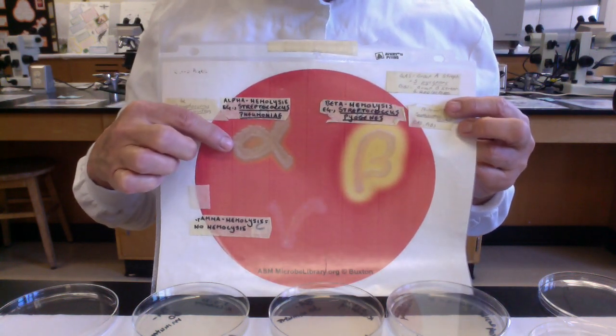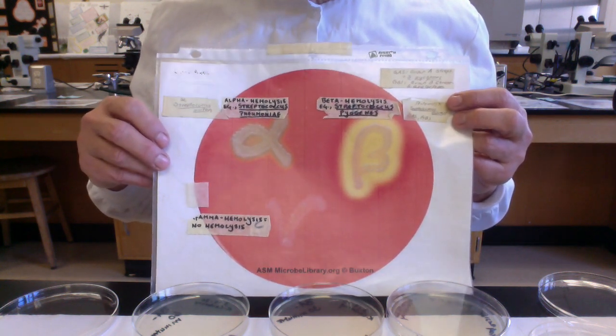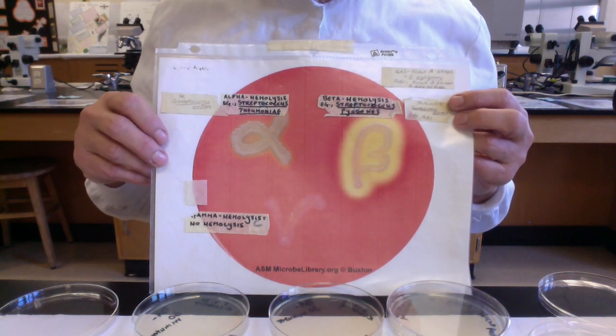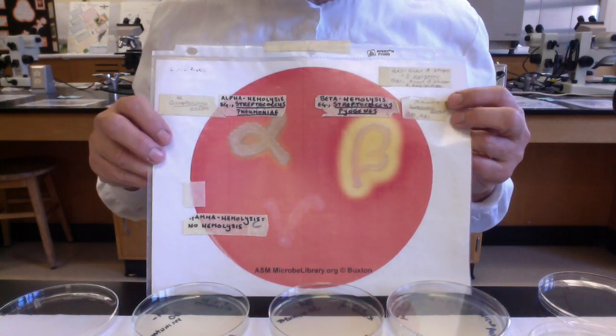So here we have what's called alpha hemolysis. It's a darkening, a greening of the blood agar. It's often referred to as incomplete hemolysis, meaning the red blood cells are broken open but the contents aren't totally destroyed and we get this greenish discoloration.